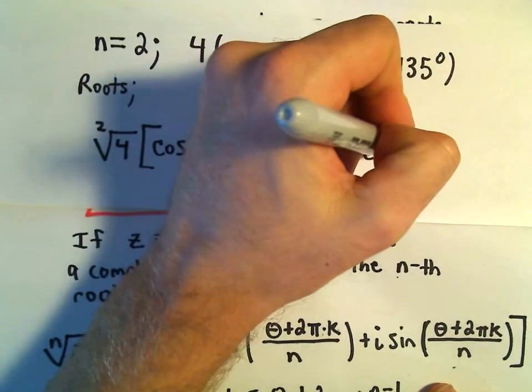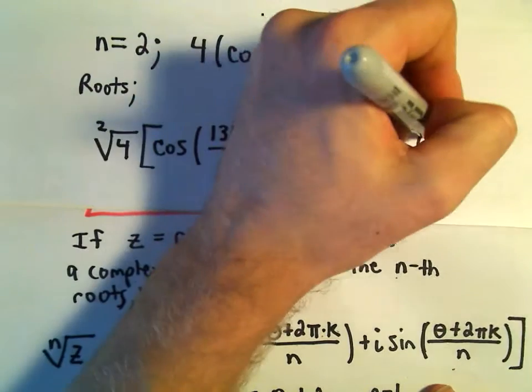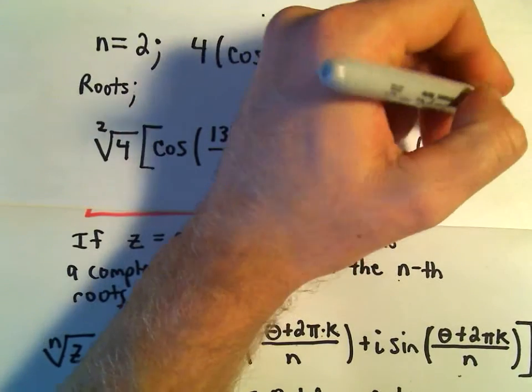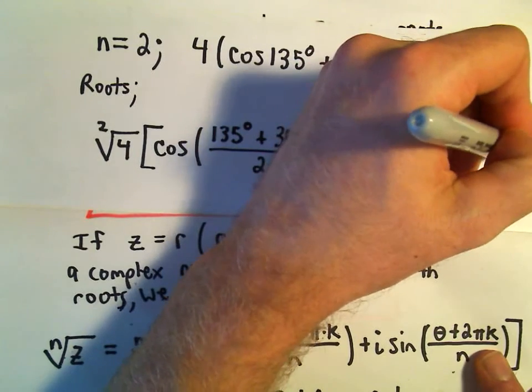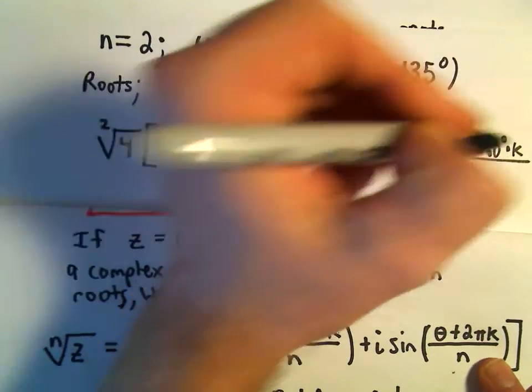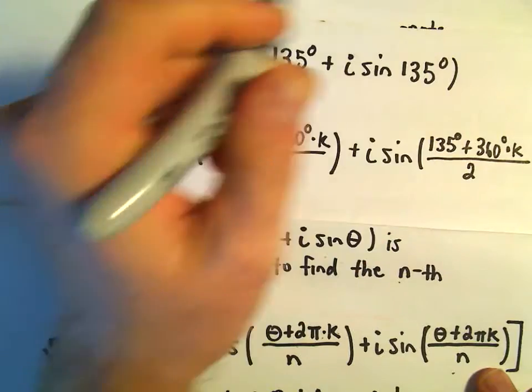Plus i sine of 135 degrees, plus 360 degrees times k, all over our n value, which is 2.